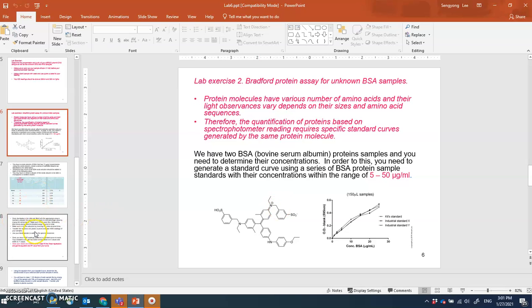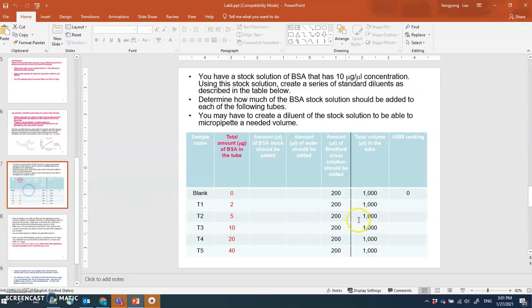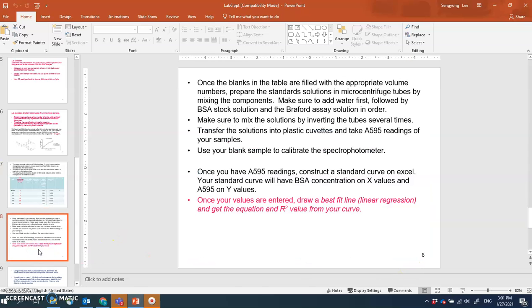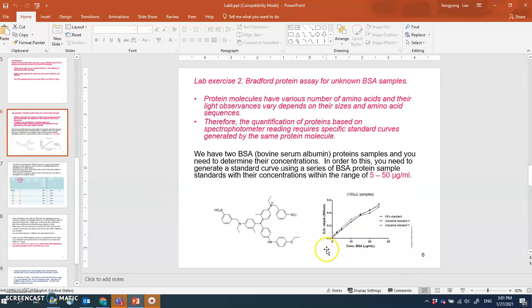Once you did that, you write down all the absorbance at 595 nanometers and you will plot a standard curve using your computer software. We'll give you a laptop computer with Excel and I'll show you how to plot, and you will get a standard curve made something like that.